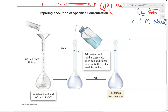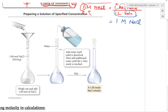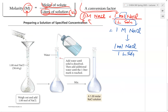So how do we prepare a solution of a particular molarity? Let's say we want to make a 1 molar NaCl solution. First, let's understand what 1 M NaCl means: there is 1 mol of NaCl in 1 liter of this solution. One mole of NaCl has a molar mass of 58.44 grams, so there will be 58.44 grams of NaCl present in 1 liter of the solution.